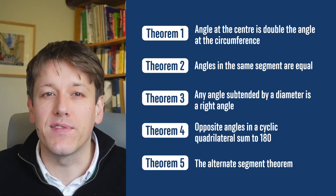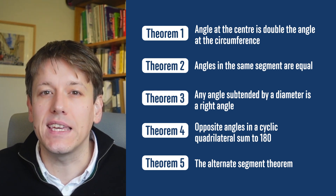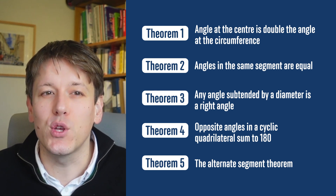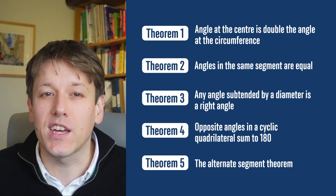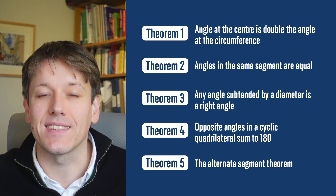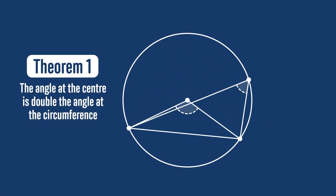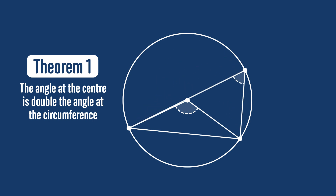In this video, I'll show you proofs of these five key circle theorems, explain where they usually fall short, and show you how to give a proof that covers all cases. The first circle theorem we will prove is the one that says that the angle at the centre is double the angle at the circumference.